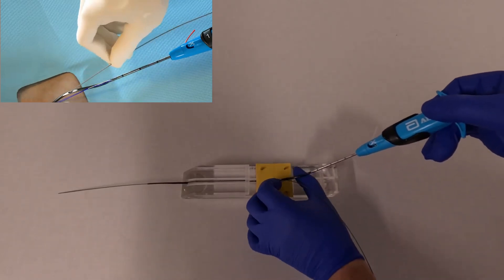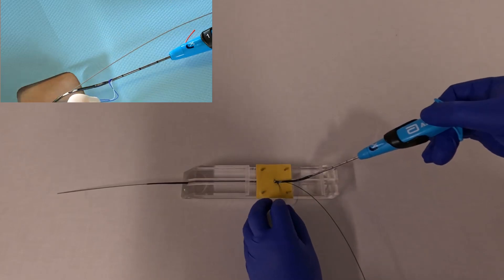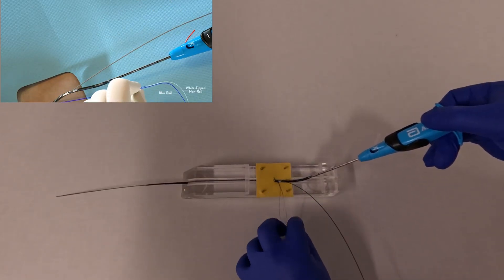At this point, the sutures are available on the side of the device so you can grab those and pull them out so that they're free.